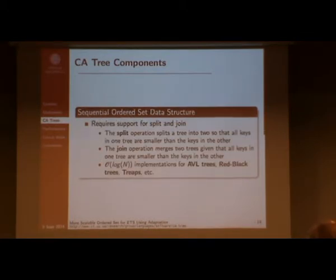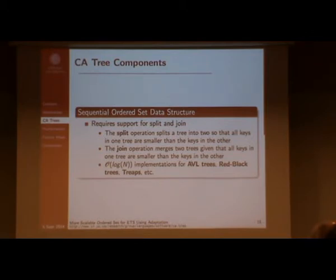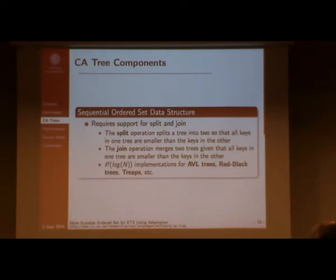The second component is a sequential ordered set data structure that provides split and join operations. The split operation takes a sequential data structure and splits it in two such that the largest key in one is smaller than the smallest key in the other. The join operation is the reverse — it merges two sequential structures together. Many sequential ordered set data structures provide these operations in O(log n) time, for example AVL trees, red-black trees, and treaps.